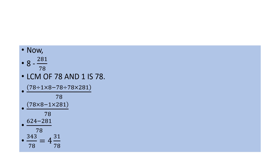Solving 624 minus 281 gives 343 by 78. Changing this fraction into a mixed fraction, we get 4 and 31 by 78 as the answer.